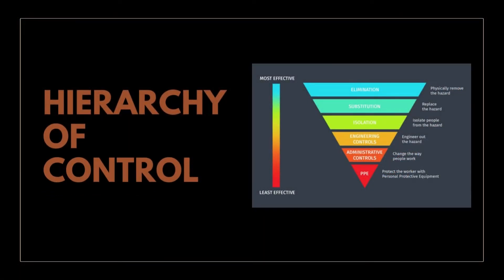How do we deal with hazards in a restaurant? The hierarchy of controls will help in the adoption of fundamentally safer systems, which reduces the danger of disease or damage. Elimination is the most effective control, while personal protective equipment is the least effective control.